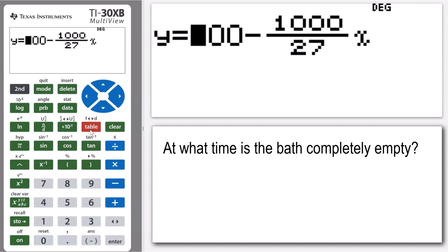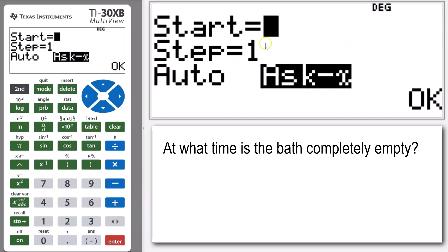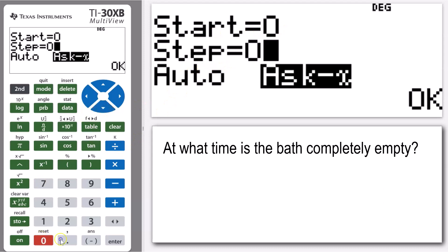So I'm just going to go back into my table, and I'm going to keep that same equation in there, so just press enter. Now in this case, I'm going to start my time at zero again, but in this case I'm going to make the step 0.5, okay? So I'm going to go up in a half a minute rather than a minute.